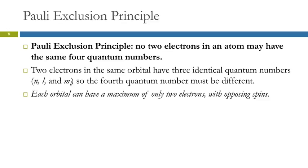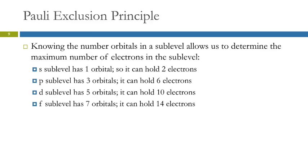If we know how many orbitals are in a sublevel, we can figure out how many electrons it holds, since each orbital holds two electrons. One orbital holds two electrons; seven orbitals hold fourteen electrons.